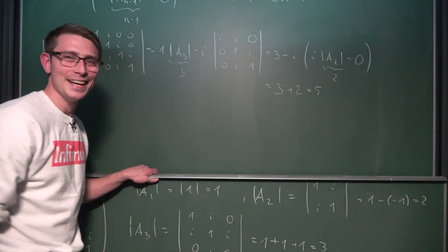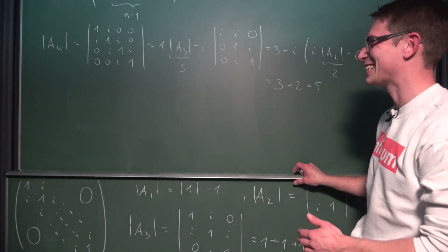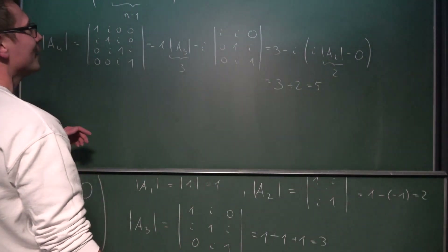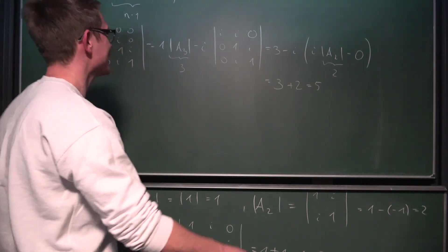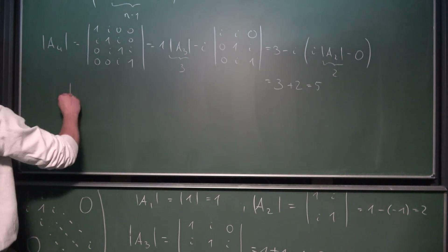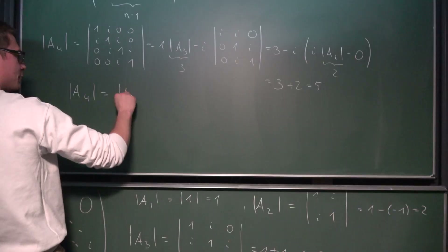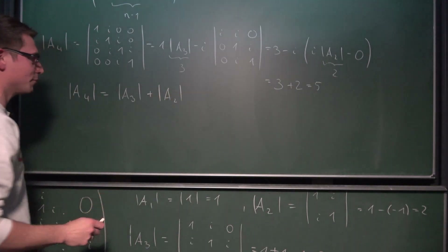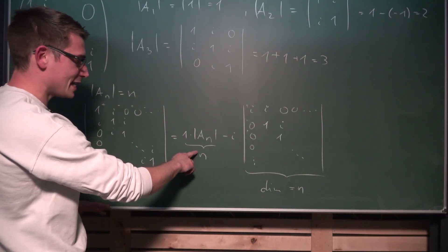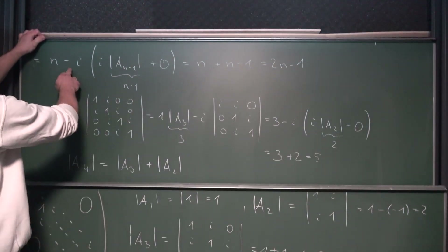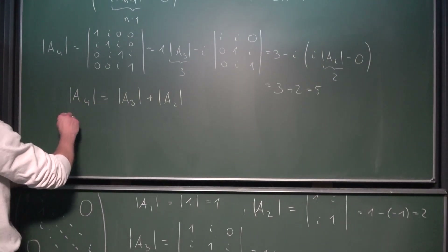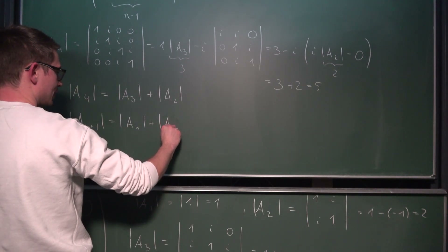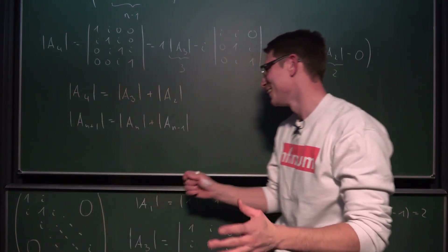That is even better than a counting determinant! Notice what's happening: A4 equals det(A3) plus det(A2), because i times i equals negative 1 and the negative cancels out. We had the same structure here — An was our first term and then minus minus det(A_{n-1}). So in the general case, det(A_{n+1}) = det(An) + det(A_{n-1}).